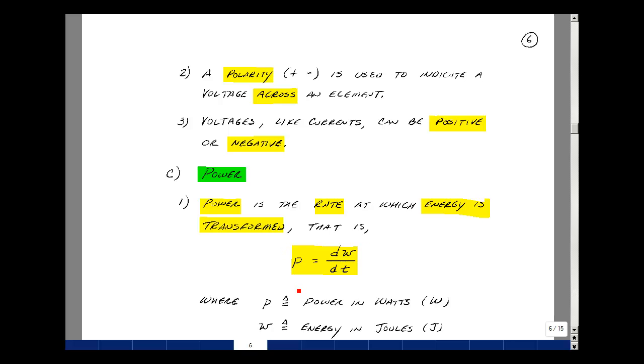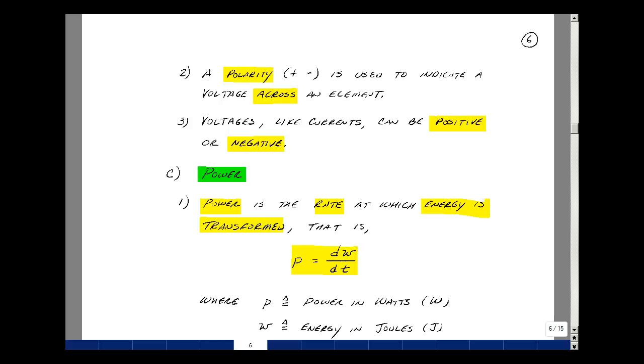Our next quantity is power. It's the rate at which energy is transformed. In other words, it's the change in energy per unit time. Make the change small enough, and you have the definition of a derivative. Here, power is in watts, energy is in joules, and T is time in seconds.